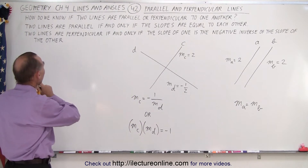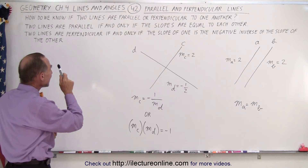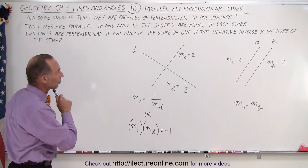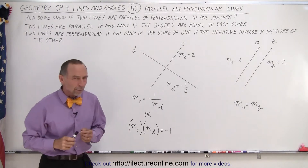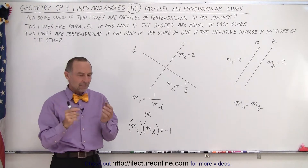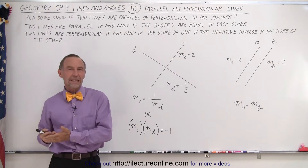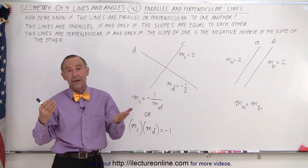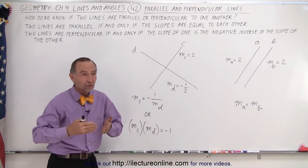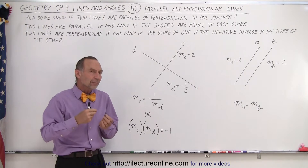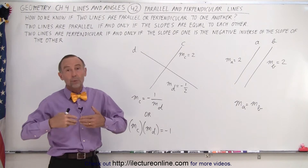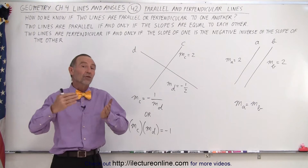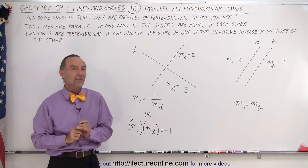Two lines are parallel if and only if the slopes are equal to each other. What do we mean by the statement 'if and only if'? If we only said that two lines are parallel if the slopes are equal, then there may be other conditions for which they would qualify as being parallel as well, other than the slopes being equal — but that's not the case.